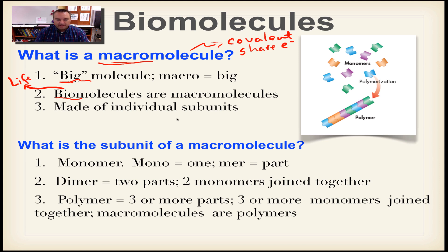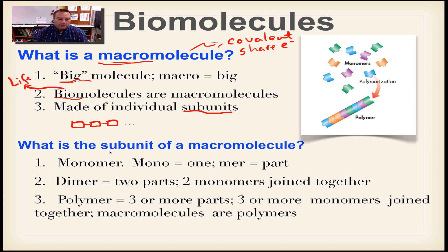Biomolecules are made of individual subunits. Think of a train: one boxcar is connected to another boxcar, connected to another boxcar, and so on. Each of those train cars is a subunit. The subunit of a macromolecule has a special name in science — we have to name everything something special.